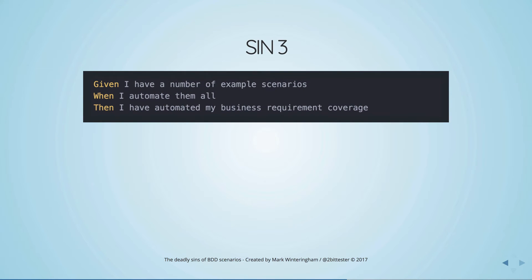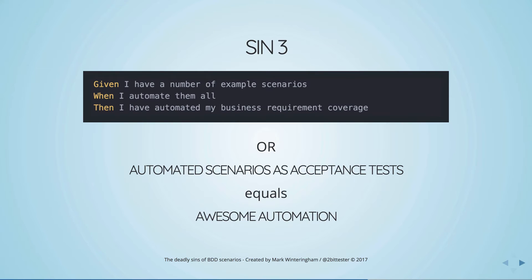Let's move to Sin 3, my favourite: Given I have a number of example scenarios, when I automate them all, then I've automated my business requirement coverage — automated scenarios equal awesome automation. What I'm talking about here is the trap of having an automation strategy solely based on automating scenarios and thinking that's enough to validate your system and share information about what's going on.